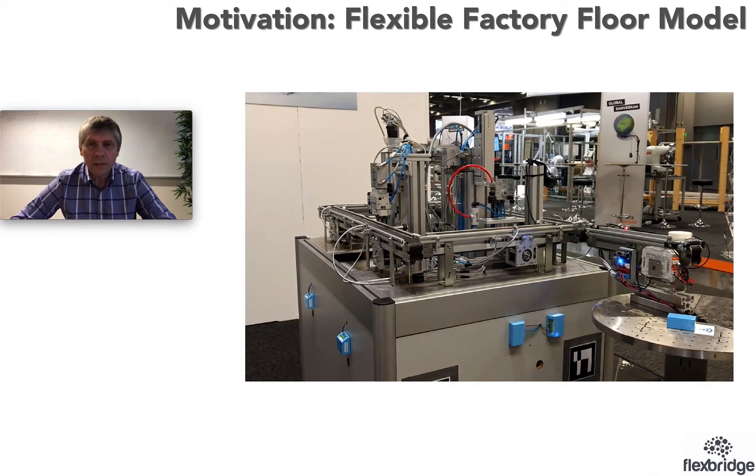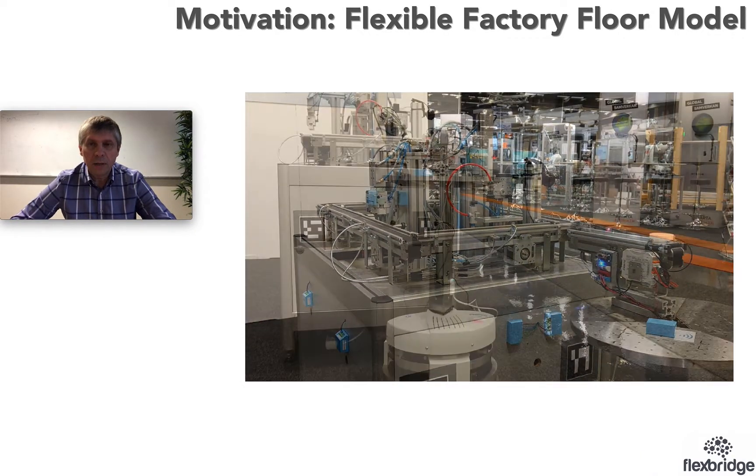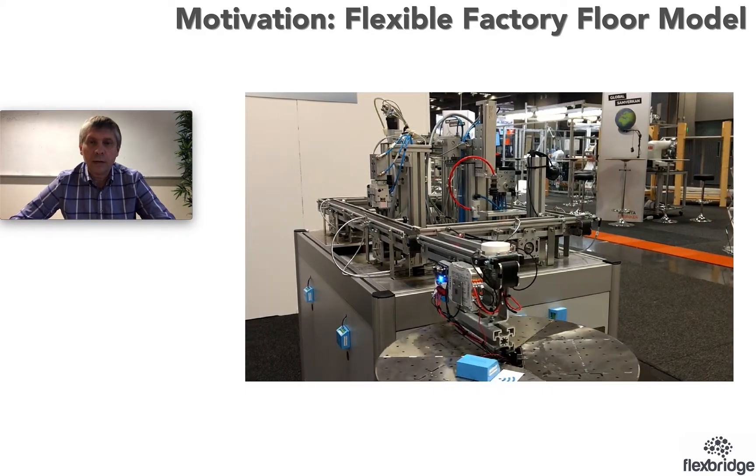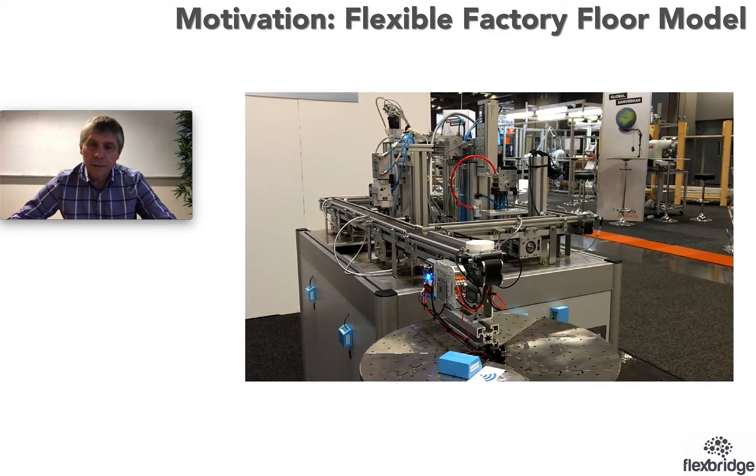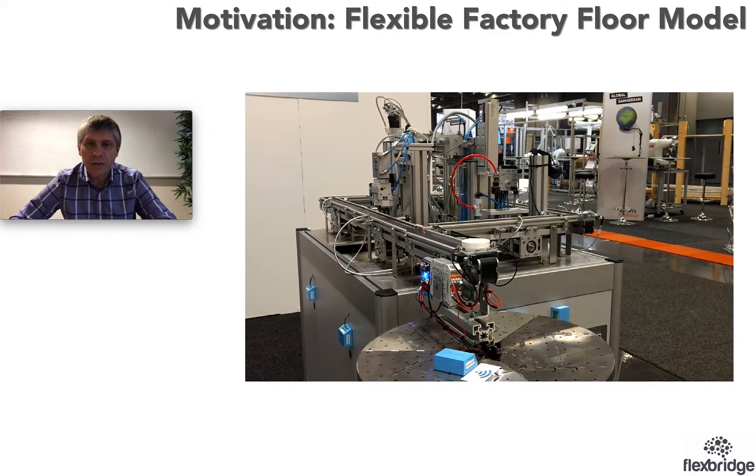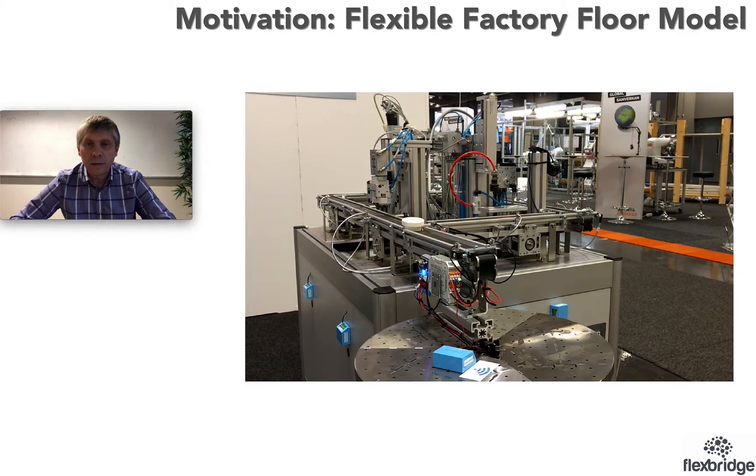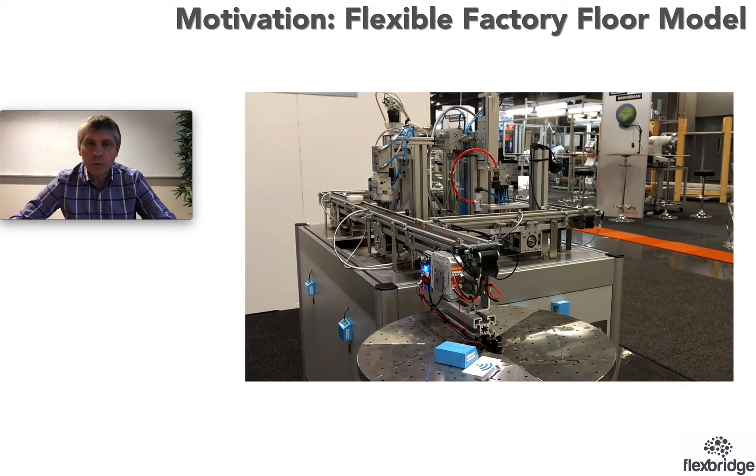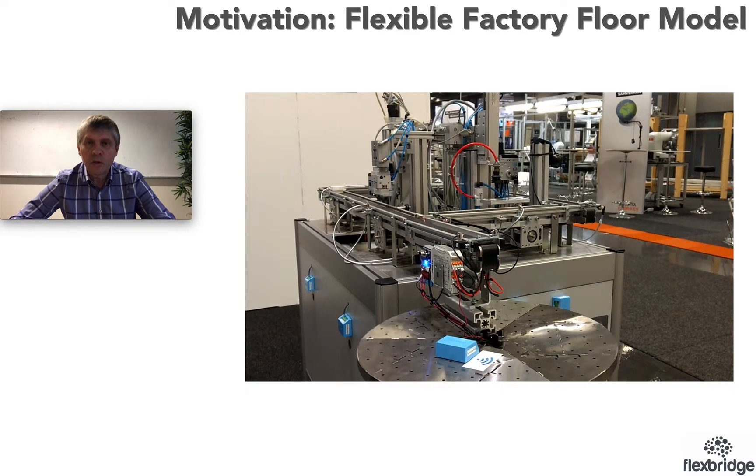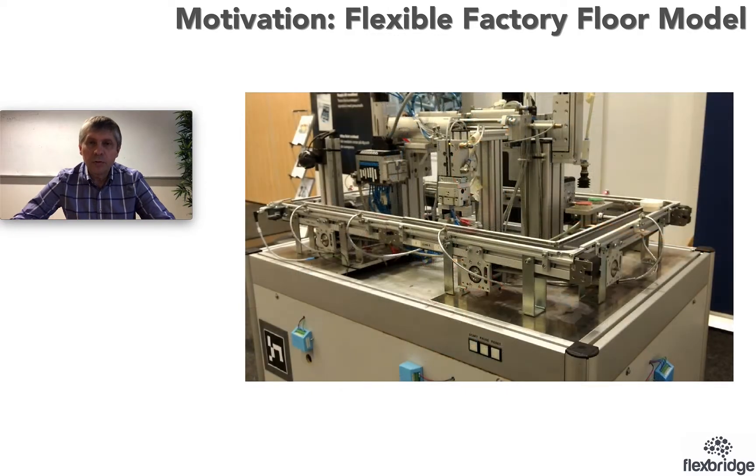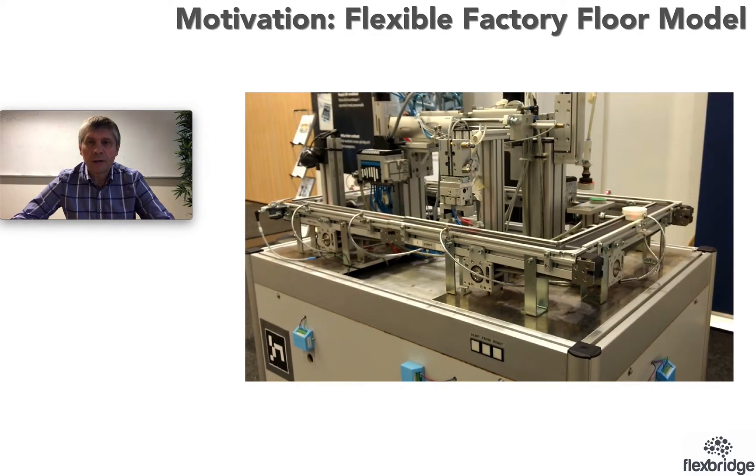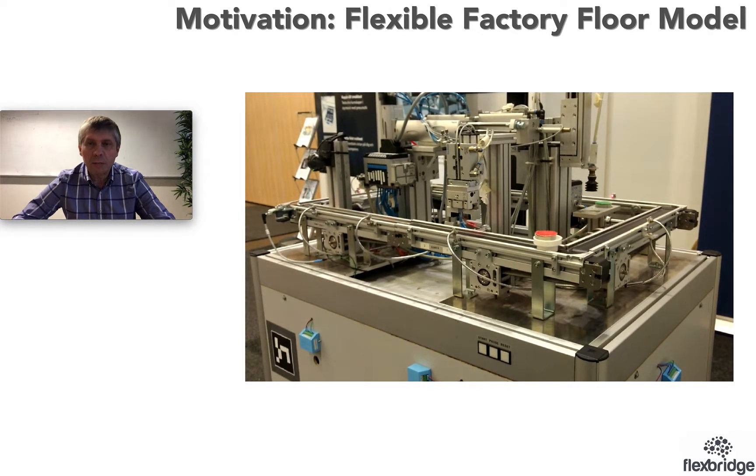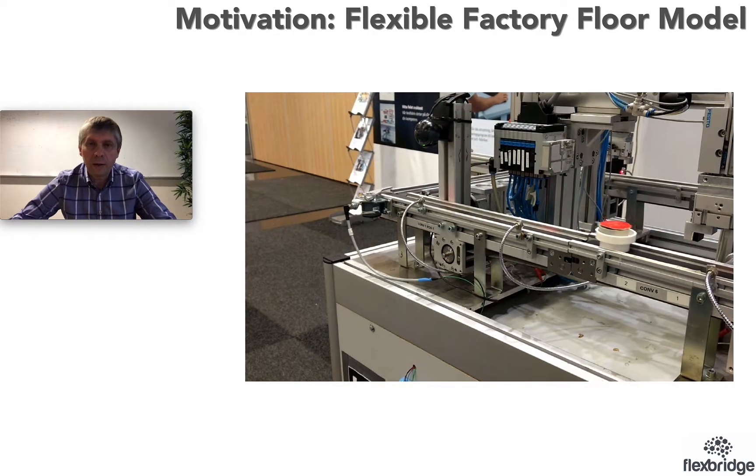Take a look at this model of a flexible assembly line that has a variable layout and is automated using IEC 61499 running one program on a network of 10 controllers. This production line demonstrates the concept of producing to order, kind of lot size one production, where on the same production line you can produce different products dependent on the order.